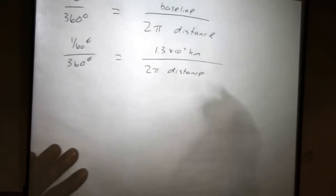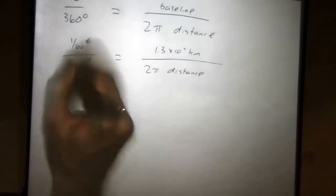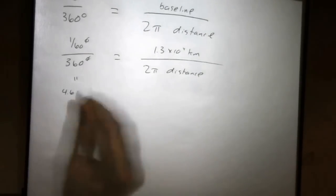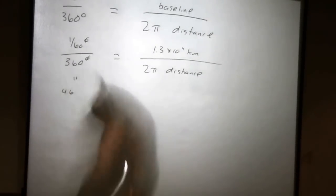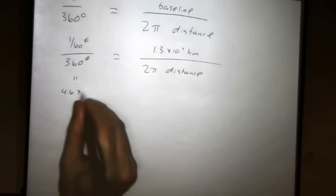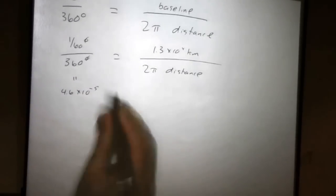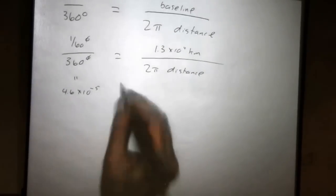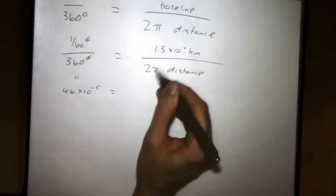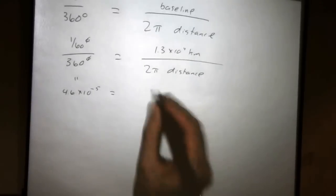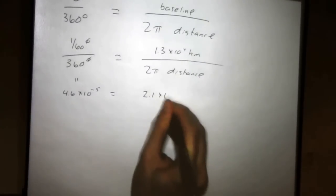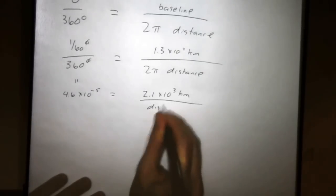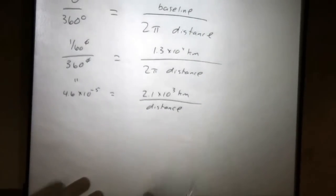And distance is what we want to know. Well, let's take this. You stick it into a calculator, and you do that, you're going to get a very small number. 1 sixtieth divided by 360 comes out to 4.6 times 10 to the minus 5, and there's no unit. It's dimensionless. The degrees have cancelled out. And over here, if we divide 2π into this number, we get about 2.1 times 10 to the 3 kilometers, divided by the distance between Earth and Venus at closest approach.